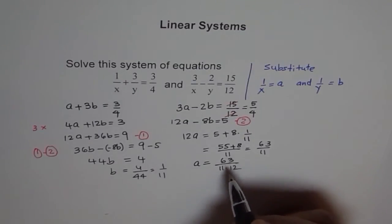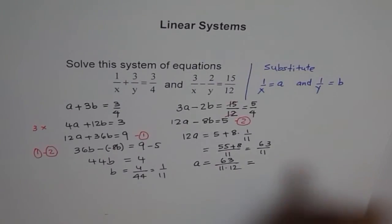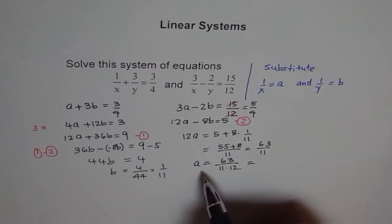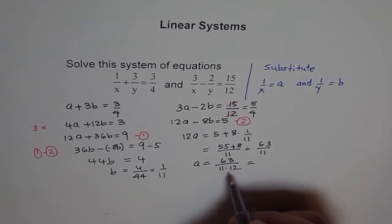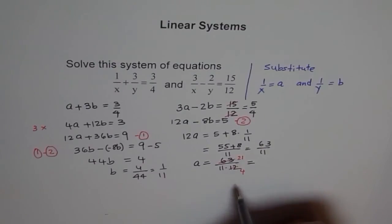So 63 over 11 times 12 is our value for A. Let's simplify it. We can divide this by 3. So if I divide this by 3, we get 3 times 4 is 12, and 3 times 7 is 21. So it is 21 over 44.